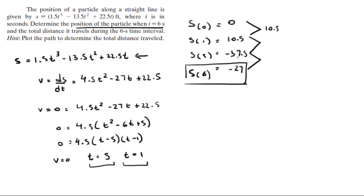Between 10.5 and -37.5 there is 48. And between -37.5 and -27 there is a 10.5 difference.